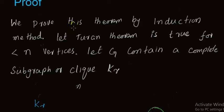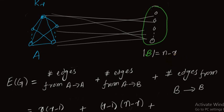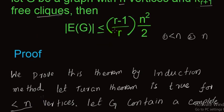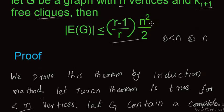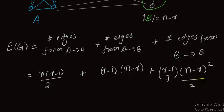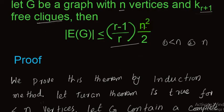Since we assumed Turán's theorem is true for less than n vertices, and set B has n−r vertices which is less than n, this relation holds for set B. So the total number of edges from B to B is less than or equal to (r−1)/r × (n−r)²/2.